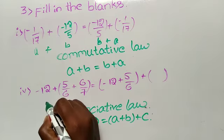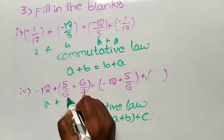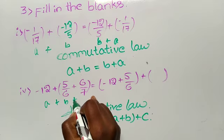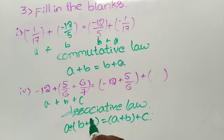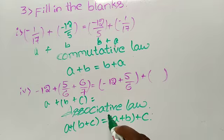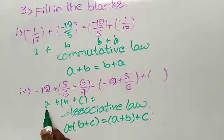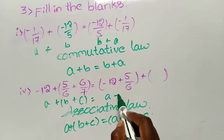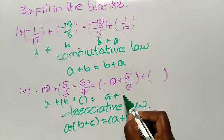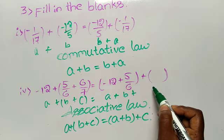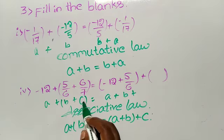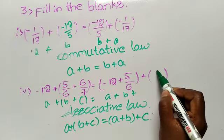Here we have to take a = -12, b = 5/6, and c = 6/7. Yes, it is here: -12 means a, plus 5/6 means b. Which value is missing? The c value. What is the c value? 6/7.